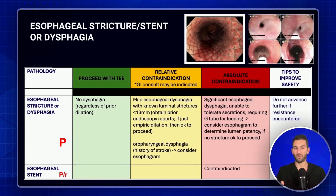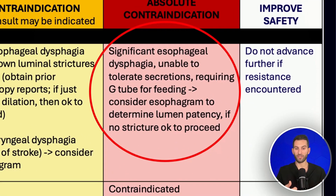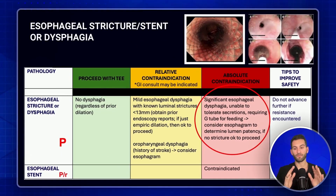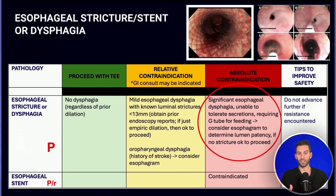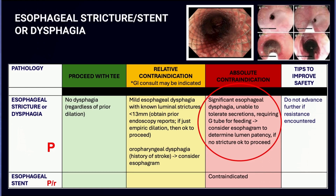Esophageal strictures or stents are a major factor when evaluating TEE safety. With strictures, the question is: is the esophagus patent — the P in PROBE? Ask whether the patient has had significant dysphagia, whether they're tolerating secretions or foods, whether they've ever required a G-tube, or whether an esophagram has been done to assess luminal patency. If the patient has had an esophageal stent, that's a major concern to discuss with GI. It's also critical to distinguish oropharyngeal dysphagia — such as after strokes — from esophageal dysphagia, which points to mechanical obstruction.